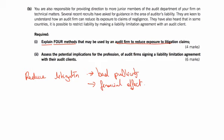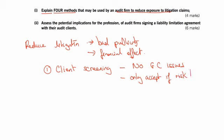First of all, to make sure we aren't liable to anybody, we need to get good clients in the first place — client screening procedures. To explain that: we don't want anybody with going concern issues, because that's when you tend to get sued, where you said everything was fine and it wasn't, and they turned out not to be a going concern. You only accept a client if the risk can be reduced to an acceptably low level, given the resources available to the firm.